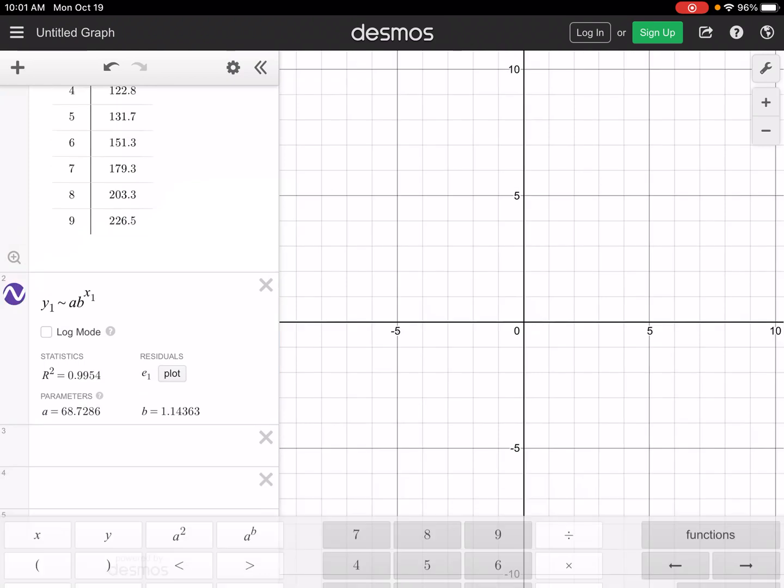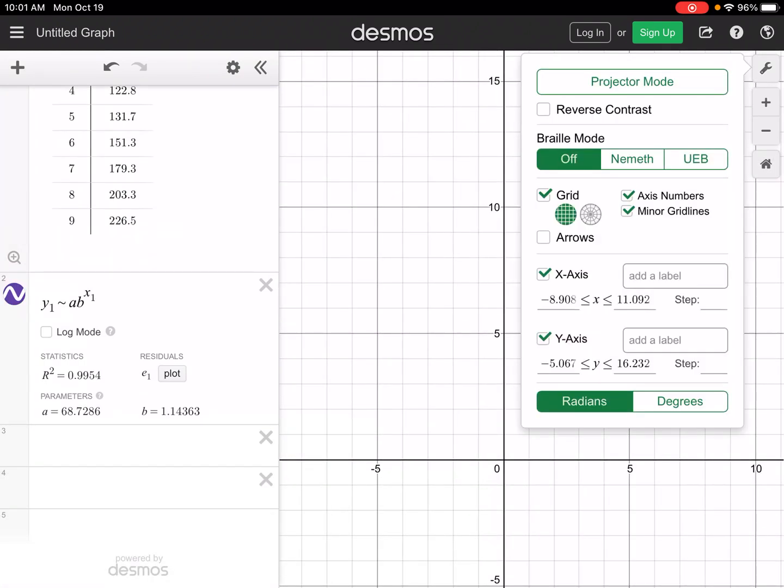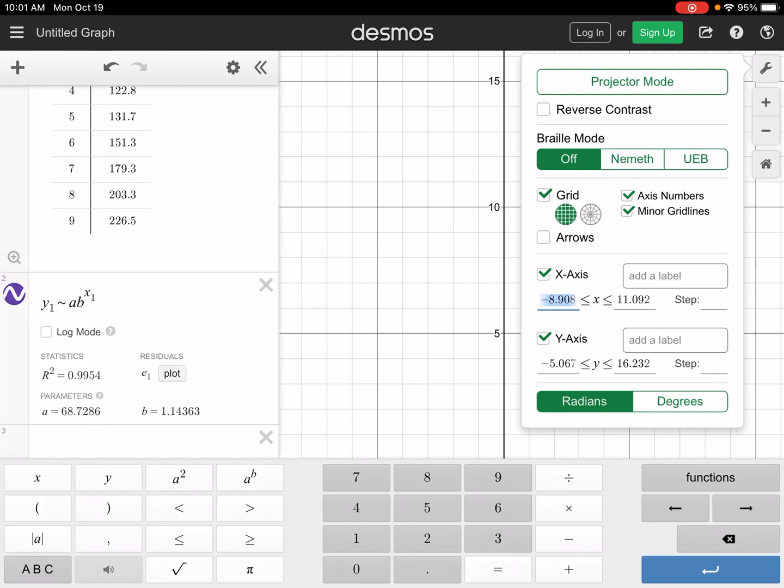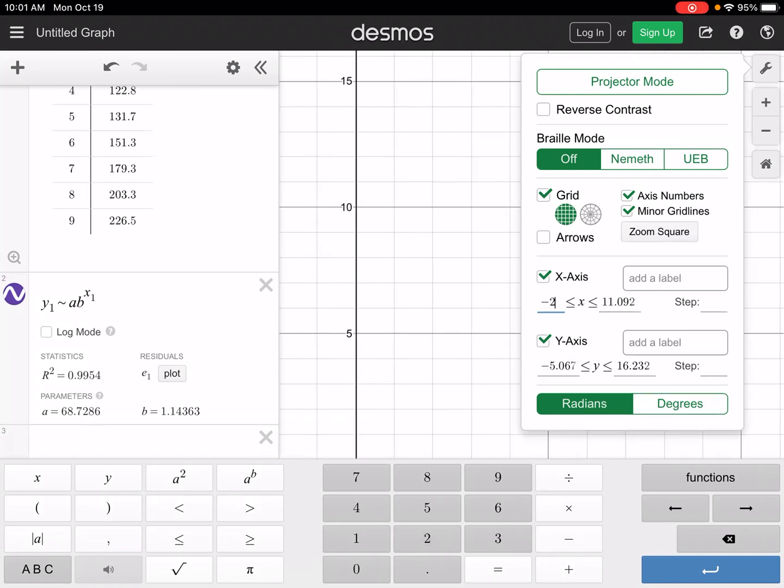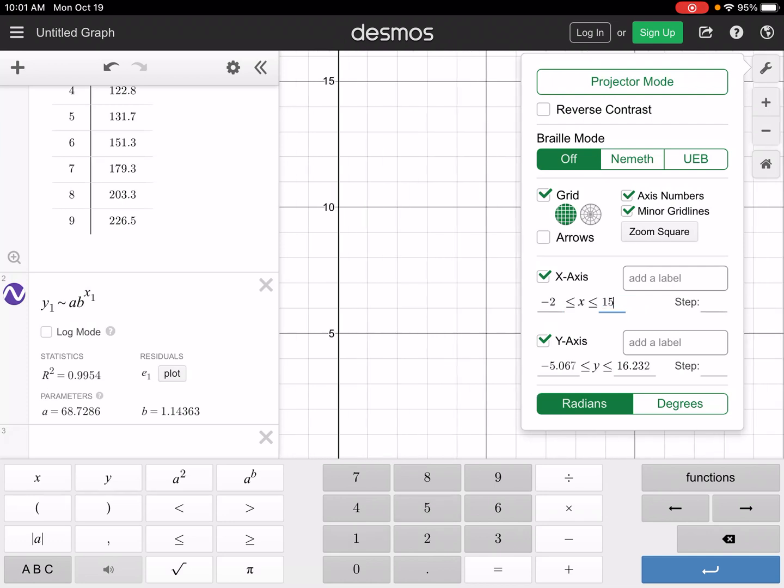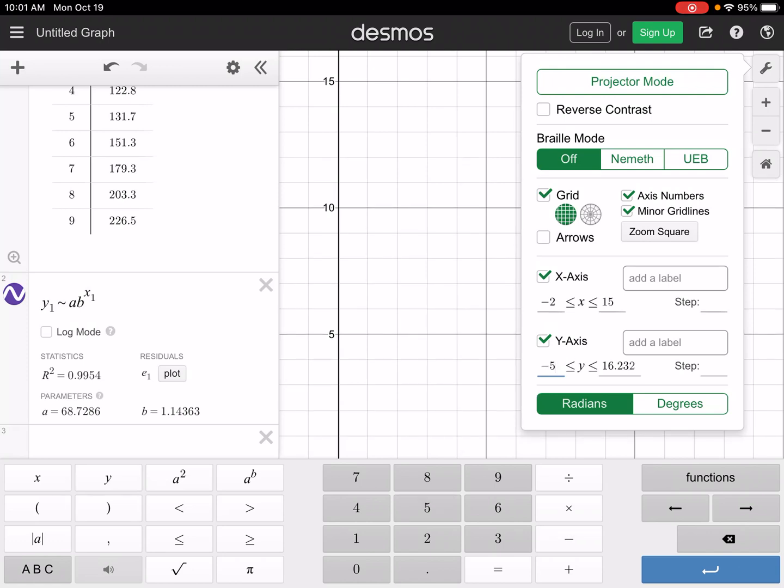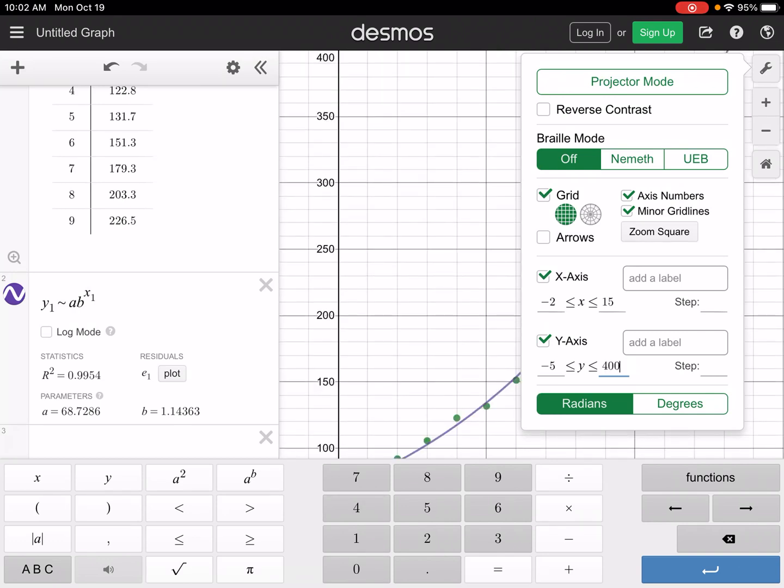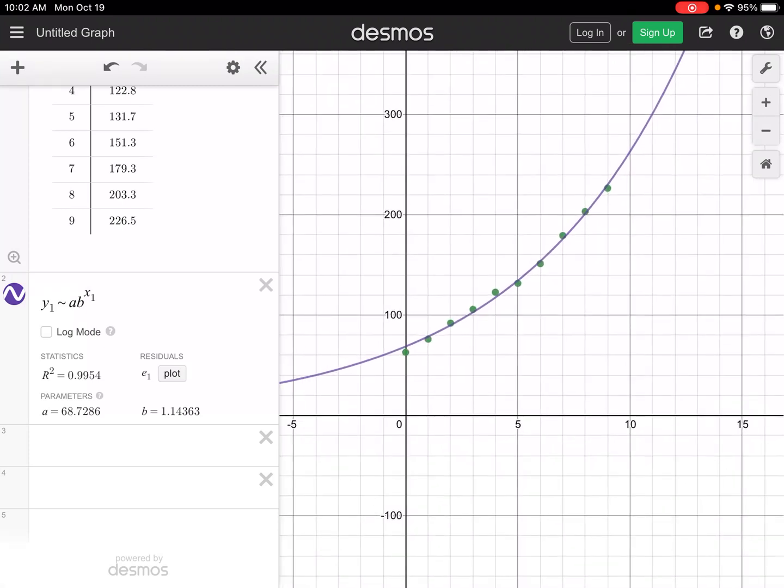The other thing I want to bring to your attention is you can hit the little wrench up in the upper right hand corner, and you might want to change your window. My x's, I'm going to go from negative 2 to 15, and my y's, I'm going to stick with negative 5, but then my y's go up to 226, so I'm going to just say like 400. Then you can see by doing this, now I can see that line that fits my data. So that's my exponential regression.